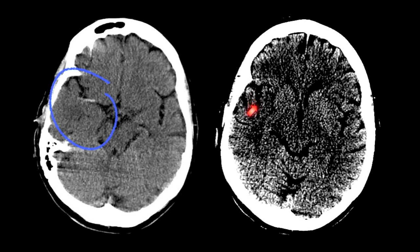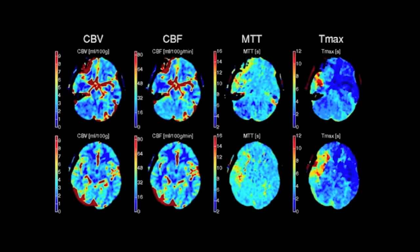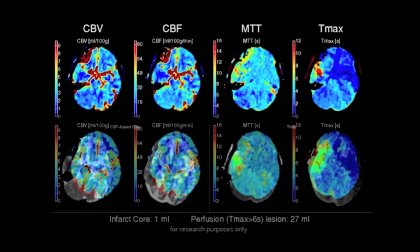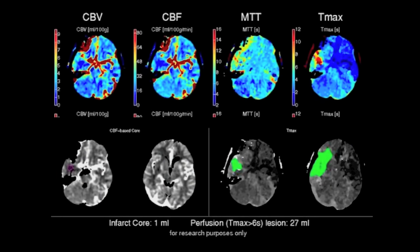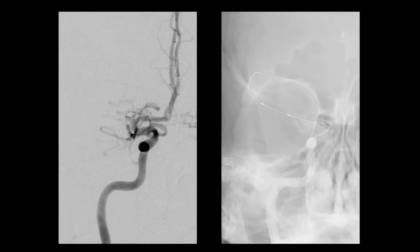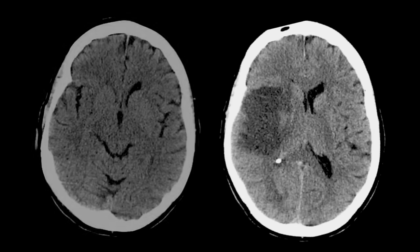In this case, CT perfusion was performed, demonstrating prolongation of Tmax and mean transit time, but no significant difference in cerebral blood volume or cerebral blood flow. The region of ischemic penumbra — the area which has not infarcted and is potentially salvageable by reperfusion — on CT perfusion is taken to be the mismatch between cerebral blood flow and prolongation of Tmax, shaded in green here. This patient went on to have an attempted clot retrieval, which unfortunately was unsuccessful, and a scan performed a few days later confirms evolution of the middle cerebral artery territory infarct.